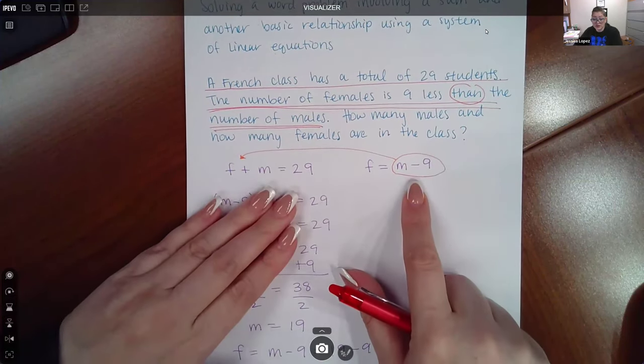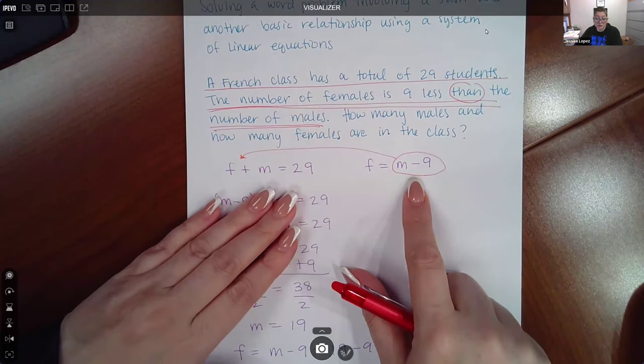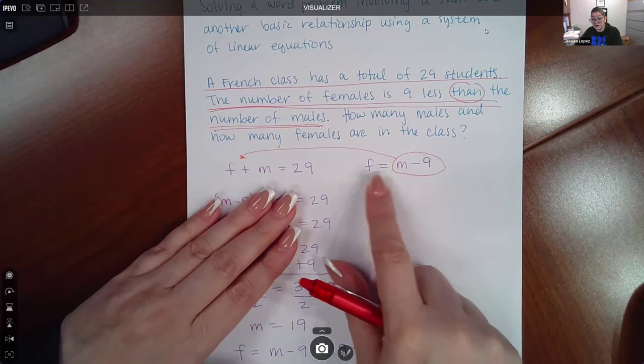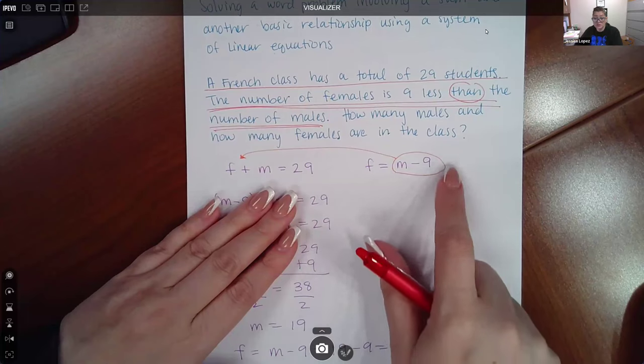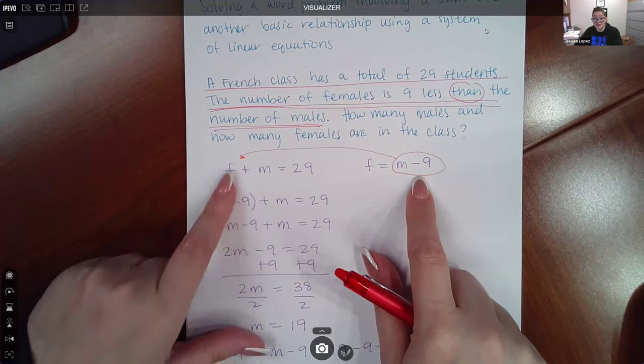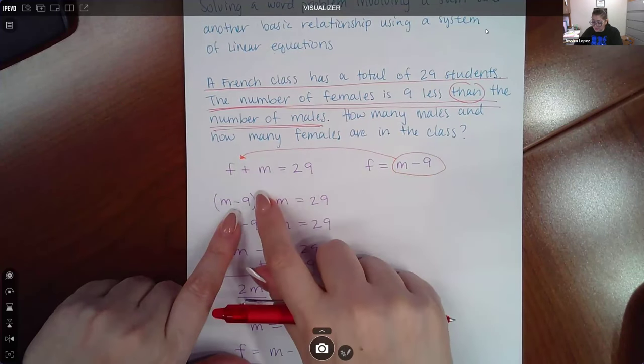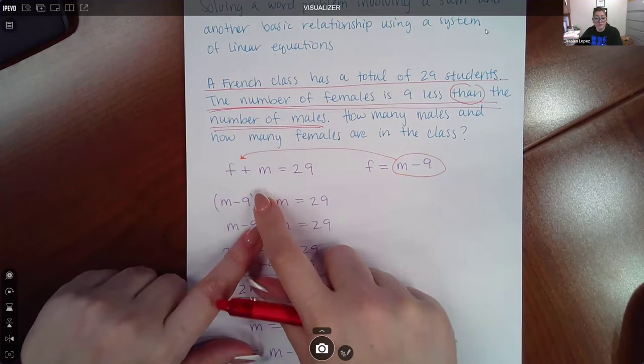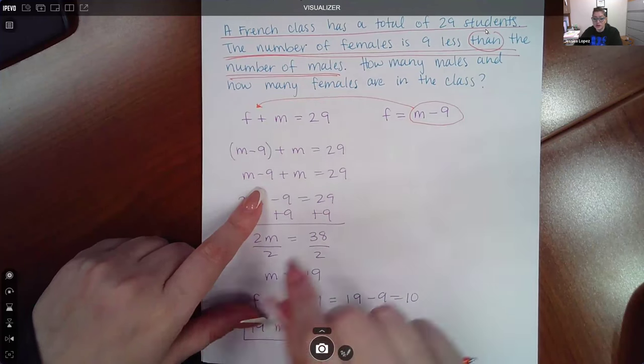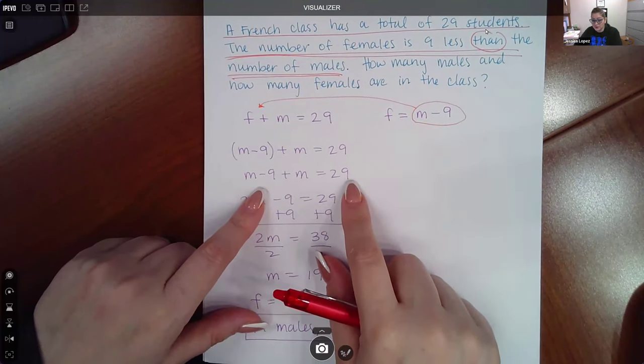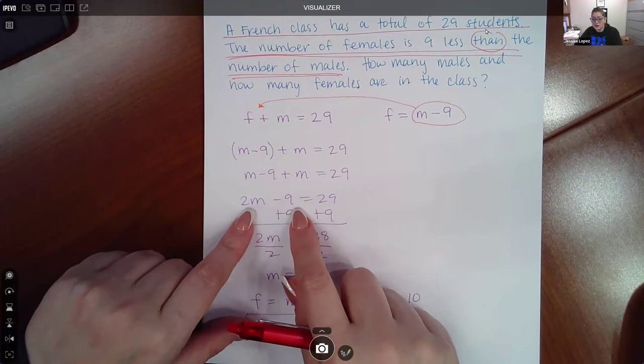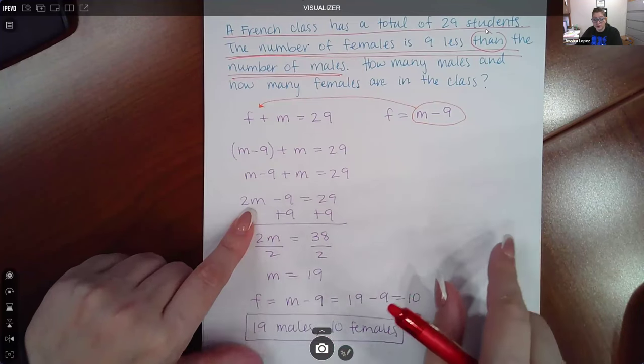Once you have your two equations, then it's just a matter of solving them whichever method you want. Since I do have one variable already isolated, I used the substitution method, which means this expression will now replace the F. So the F becomes M minus 9. M minus 9 doesn't necessarily need those parentheses. We can just combine our like terms to get 2M. Then we can resume with solving for the variable M.